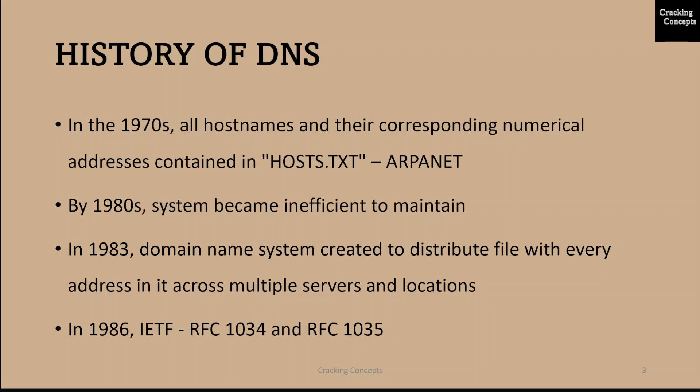By the 1980s the system became too inefficient to maintain. In 1983, the domain name system was created to distribute what was initially one centralized file with every address in it across multiple servers and locations. In 1986, IETF listed DNS as one of the original internet standards. The organization published two documents, RFC 1034 and 1035, that described the DNS protocol and outlined the types of data it was able to carry.